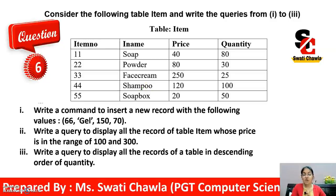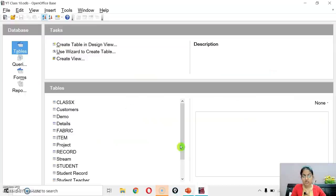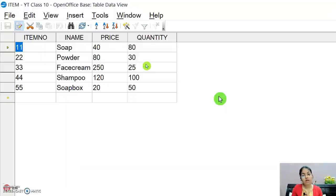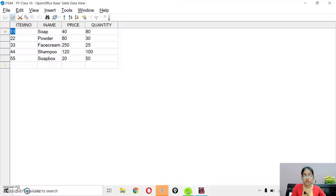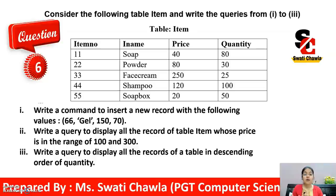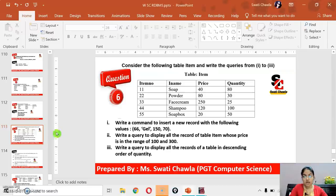Let's open OpenOffice Base — the table name is 'item'. As you can see, OpenOffice Base is open. This is the table with name 'item' and these are the records — same records and same values as given in the question. Now see the very first part: write a command to insert a new record with the following values. To insert a record (a row), you need to use the INSERT command along with its syntax.